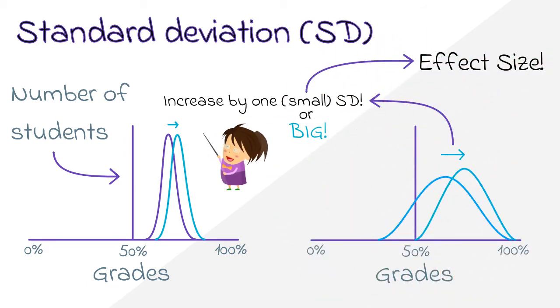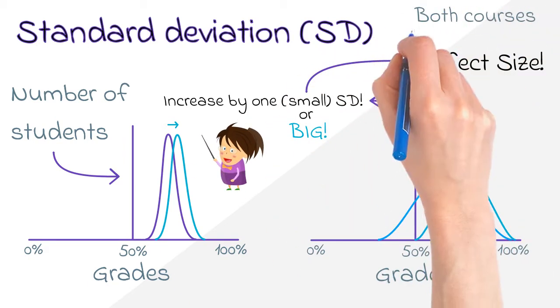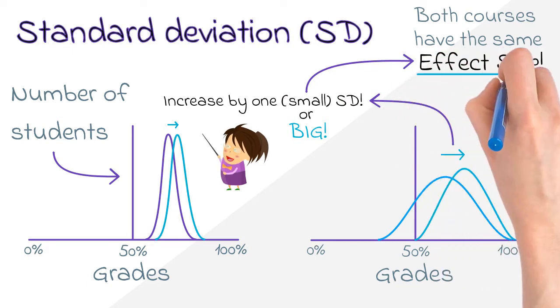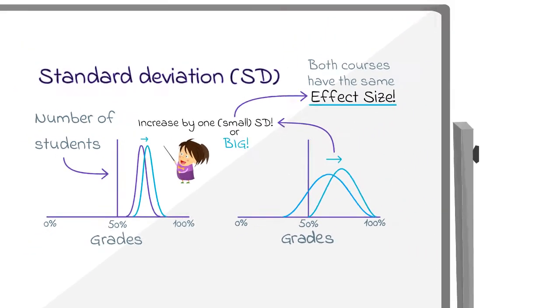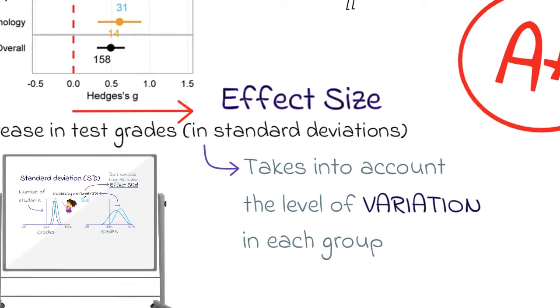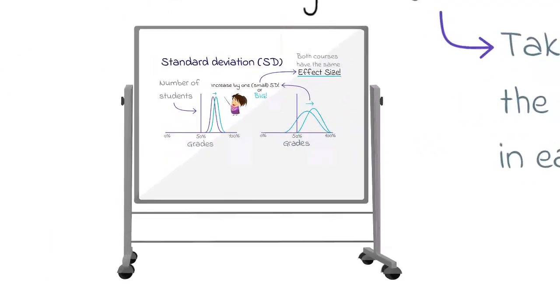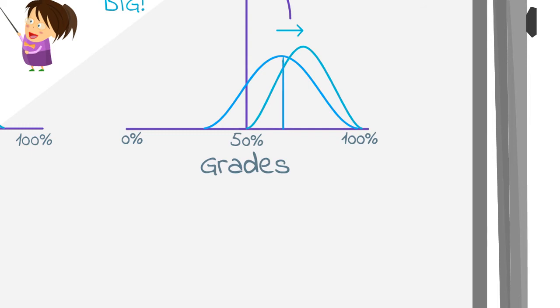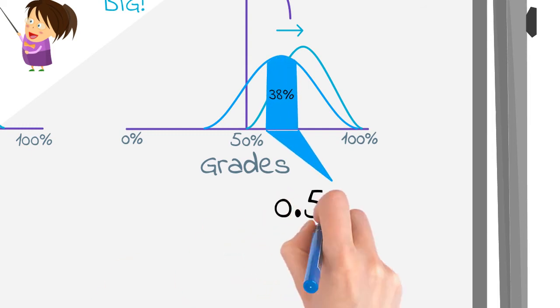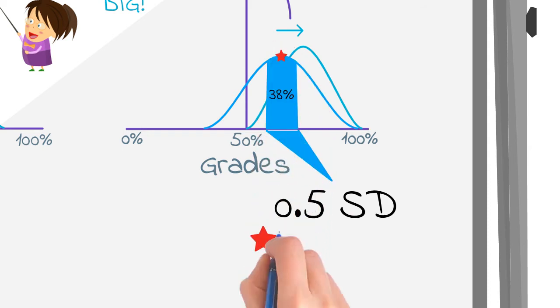By reporting the change in grade in effect size, the researchers can account for these kinds of differences between all the tests and the studies, and give a more accurate idea of the real significance, or size, of the effect. Half a standard deviation would cover the range of approximately 38% of the grades around the average. Or, in other words, someone who got the average test score would have increased by the equivalent of 19 percentile.